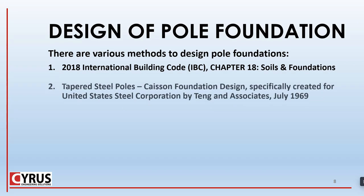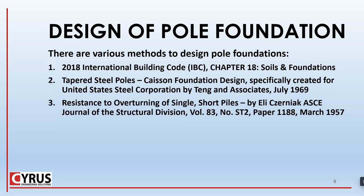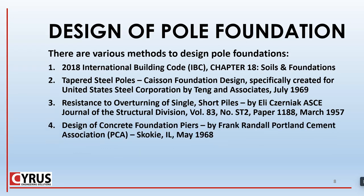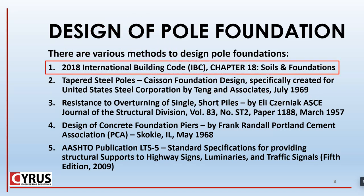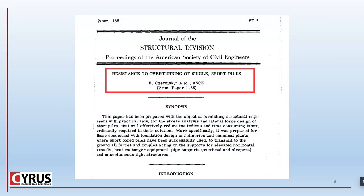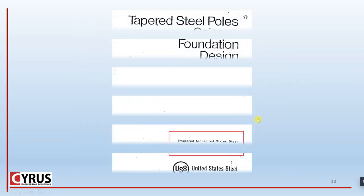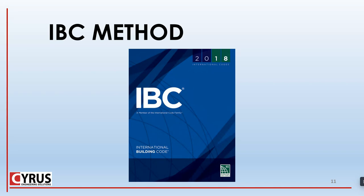There are several methods to design pole foundations: number one, the method explained in the International Building Code (IBC); number two, the tapered steel poles caisson foundation design by Tang and Associates in 1969; and number three, the method explained in a paper by Eli Zerniak in 1957. There are other methods too, but for this session we are only focusing on the IBC method.